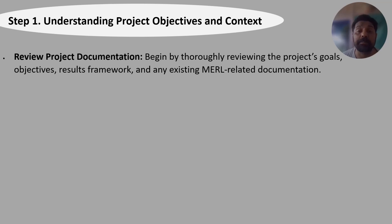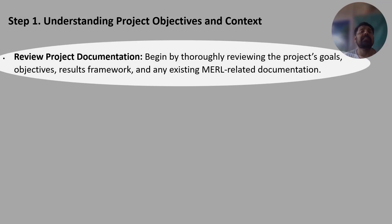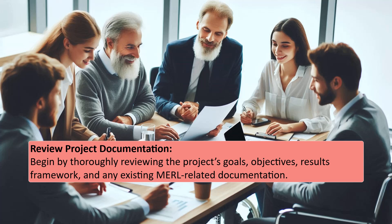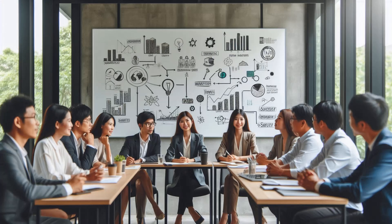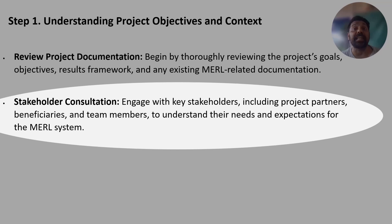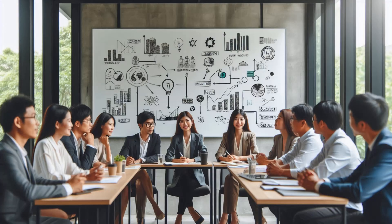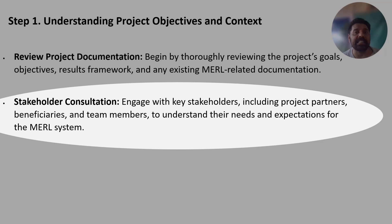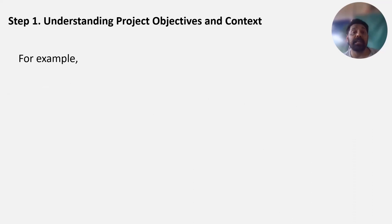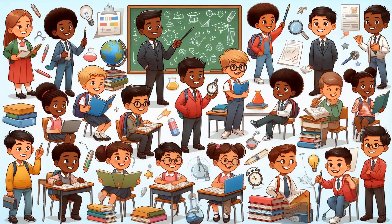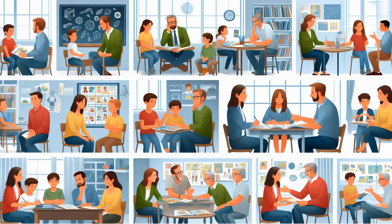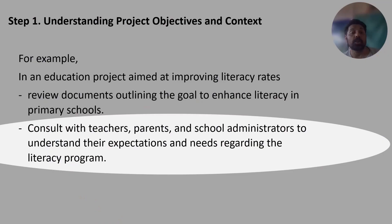Step one involves understanding the project objectives and context. Start by thoroughly reviewing project documentation such as goals, objectives, and results frameworks. Engage with key stakeholders — project partners, beneficiaries, and team members — to understand their needs and expectations. For example, in an education project aimed at improving literacy rates, review documents outlining goals for primary schools and consult teachers, parents, and school administrators.